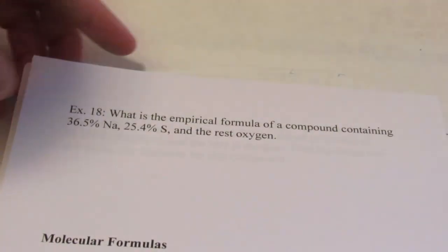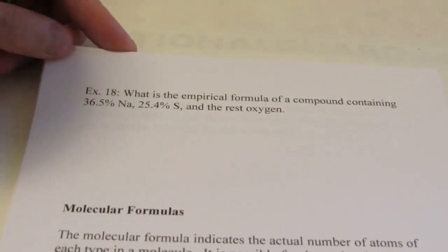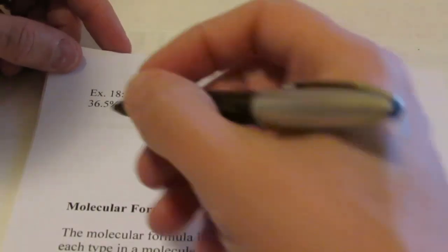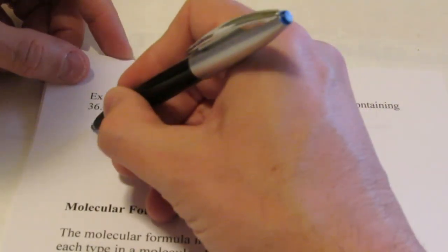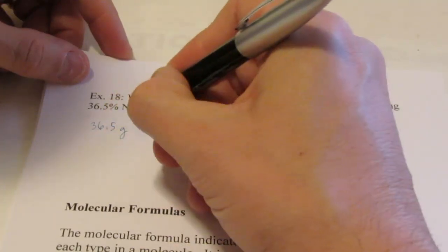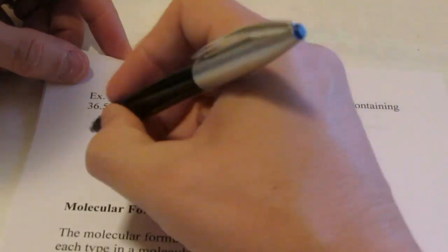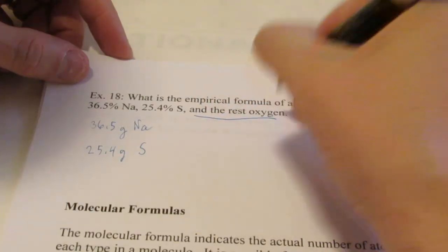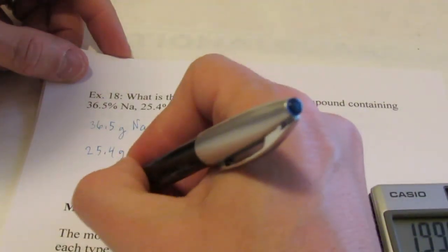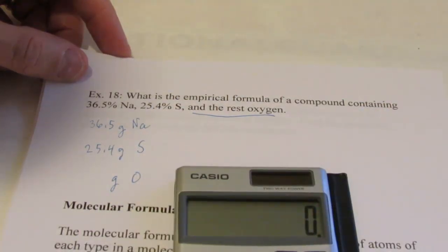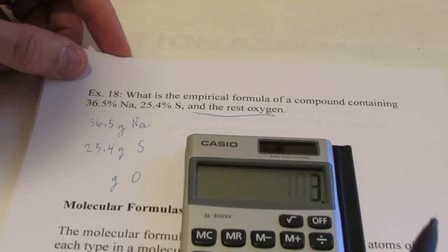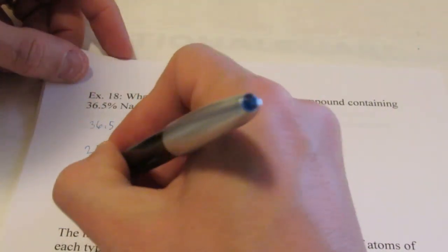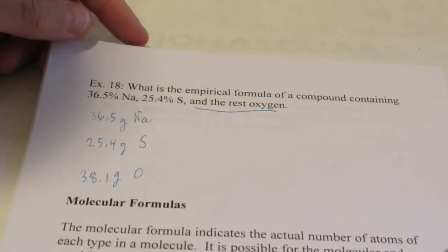Now try example 18 — pause the video, work it out, then press play to see how you did. We're back. 36.5% sodium means 36.5 grams of sodium in 100 grams of the compound. 25.4% sulfur means 25.4 grams of sulfur. And the rest is oxygen: 100 minus 36.5 minus 25.4 gives 38.1% oxygen, or 38.1 grams out of 100 grams.